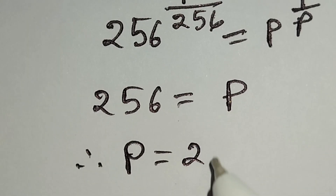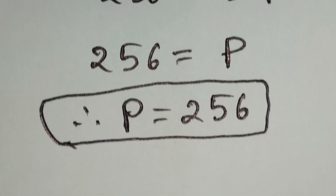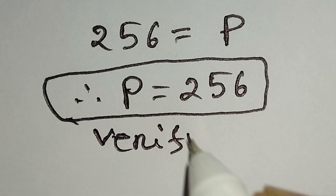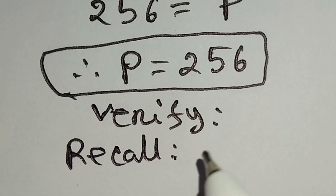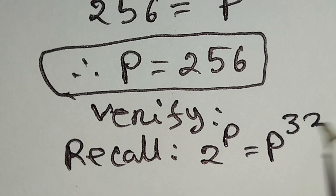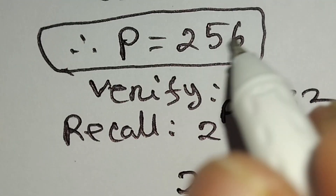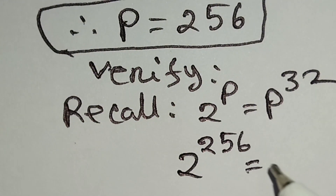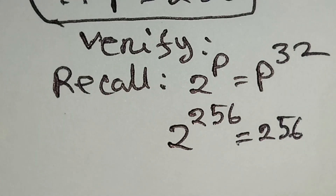Therefore p is equal to 256. This is our final answer. Now we will verify whether this value is correct or not. Recall 2 to the power p is equal to p to the power 32. Here p is equal to 256, so we can write 2 to the power 256 is equal to 256 to the power 32.